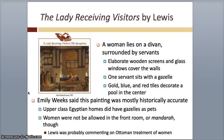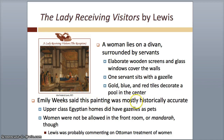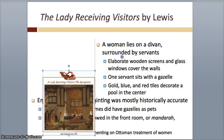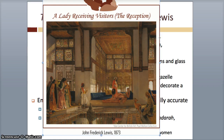Here's the artwork from John Frederick Lewis called The Lady Receiving Visitors. The lady lies on a divan, surrounded by servants. There are elaborate wooden screens, one servant sits with a gazelle, and there are gold, blue, and red tiles. Emily Weeks said this painting was mostly historically accurate — upper-class homes did have gazelles as pets. However, women were not allowed to be in the front room, so he's probably commenting on Ottoman treatment of women.